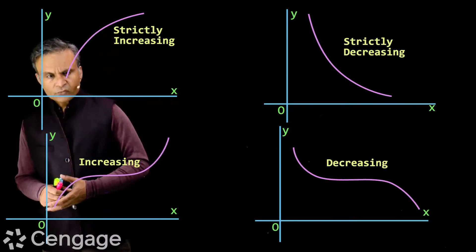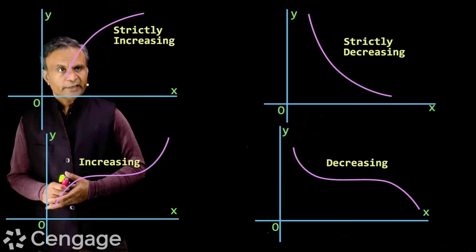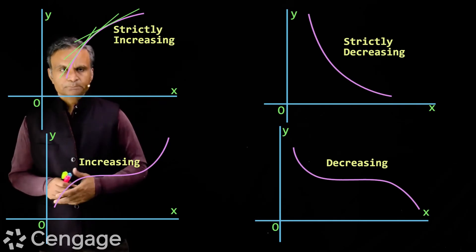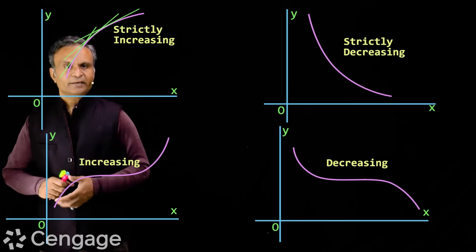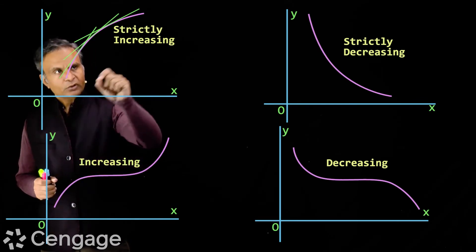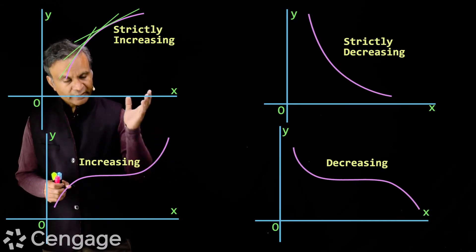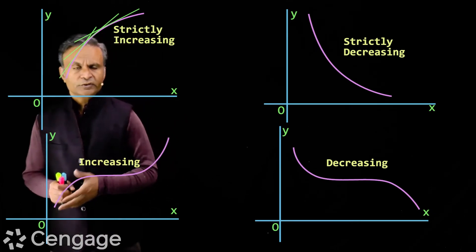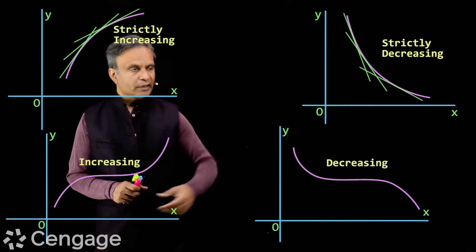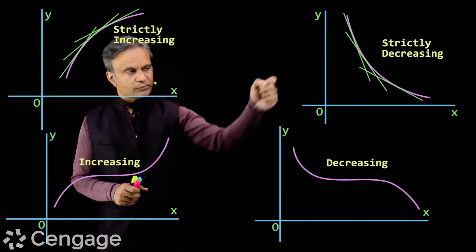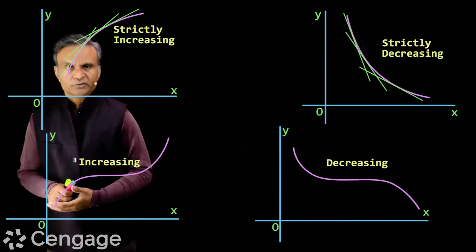We have one more definition of these functions from the differentiation point of view. If we draw several tangent lines to a strictly increasing curve, we can see that the slope of each tangent line is positive — each tangent line makes an acute angle with the positive x-axis. For a strictly decreasing curve, each tangent line will have negative slope, making an obtuse angle with the positive x-axis.